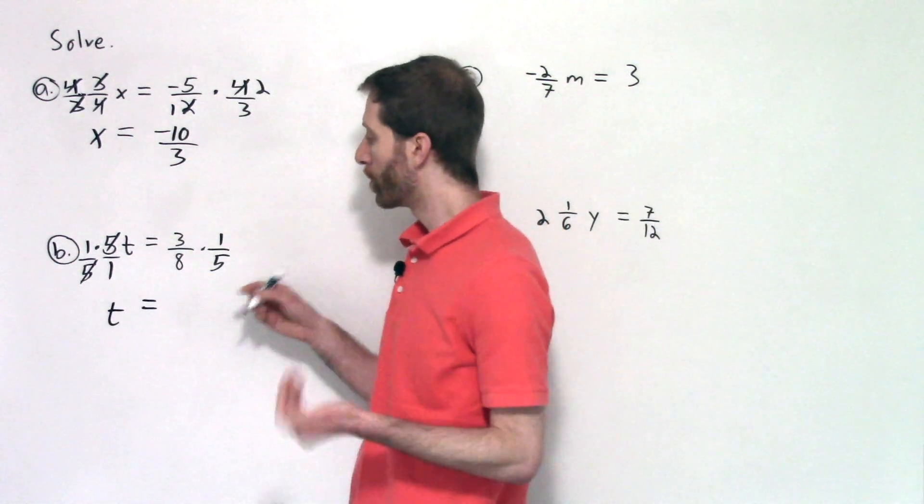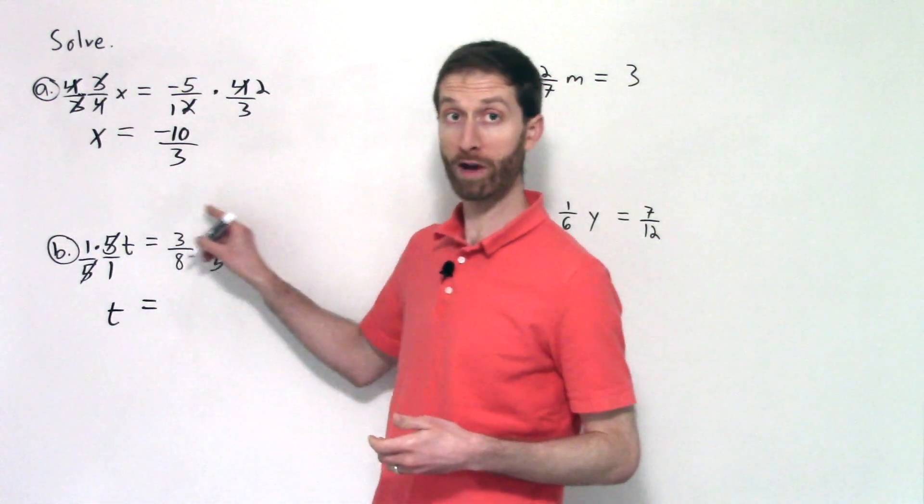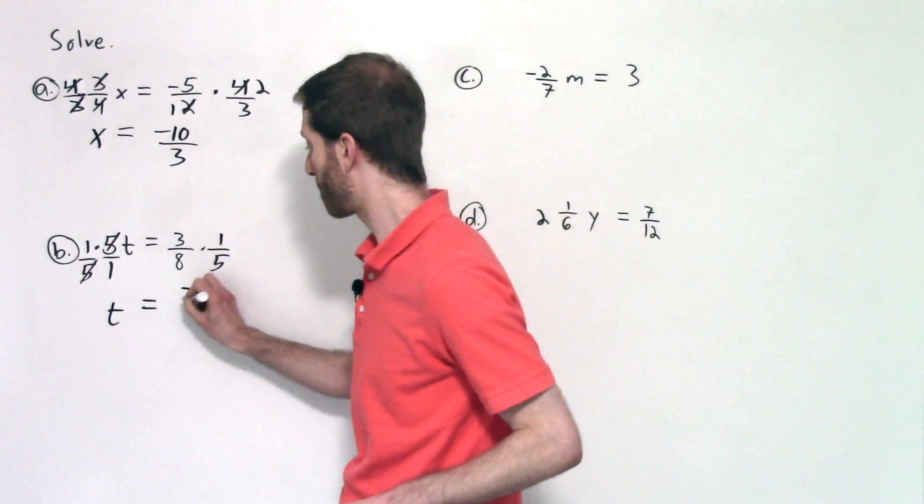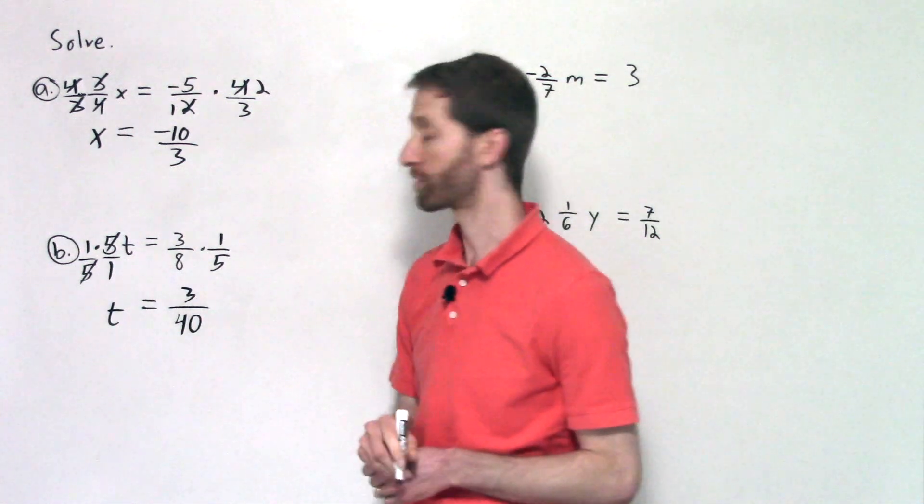On the right-hand side, we're going to multiply straight away because there's no greatest common factor between your numerators or the denominators. And so we get three times one is three, over eight times five is 40. And your final answer is three-fortieths.